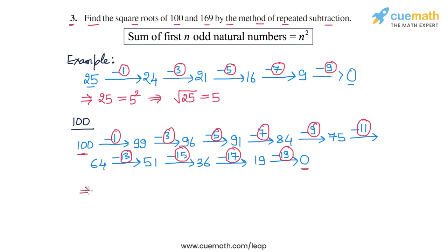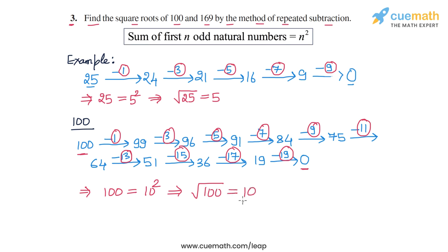This means that 100 is equal to the sum of the first 10 odd natural numbers, so 100 is equal to 10 squared. And from here, we can conclude that the square root of 100 is equal to 10. This is the answer for the square root of 100.